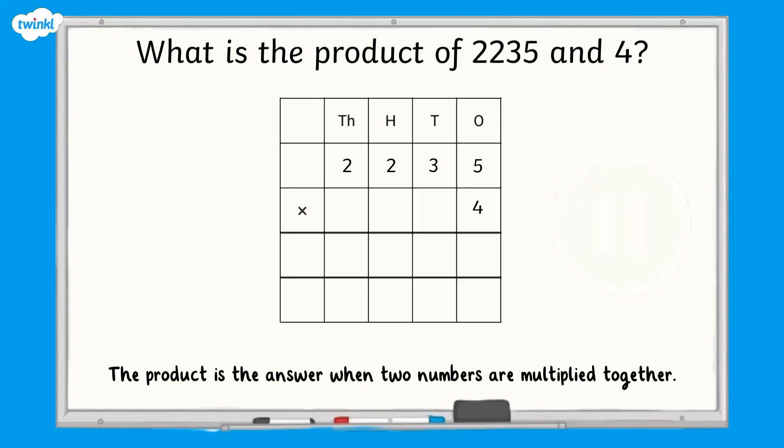Two thousand, two hundred and thirty-five multiplied by four equals eight thousand, nine hundred and forty. Eight thousand, nine hundred and forty is the product of two thousand, two hundred and thirty-five and four. Well done if you answered that correctly.